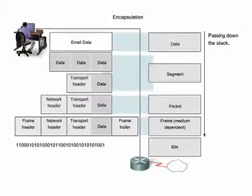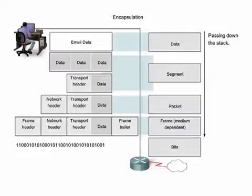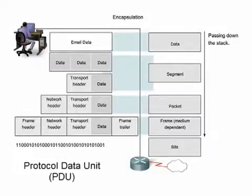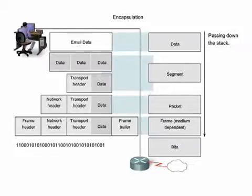As application data is passed down the protocol stack on its way to be transmitted across the network media, various protocols add layer-specific information. This is commonly known as the encapsulation process. The form that a piece of data takes at any layer is called a protocol data unit, or PDU. During encapsulation, each layer wraps the PDU that it receives from the layer above with its own specific information. At each stage of the process, a PDU has a different name to reflect its new appearance.